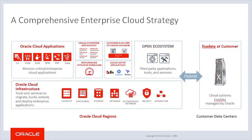Our cloud infrastructure provides all the core services to build and deploy production applications. Services include compute, containers, storage, database, autonomous database, security, and integration. We also have an extensive SaaS offering, including CX, HCM, SCM, EPM, ERP, and data as a service. Since our hardware selection and design choices were focused on dependable performance, it was easy to also cover performance-intensive workloads, including any HPC workload, even those requiring specialized hardware. And if you're building new cloud-native applications utilizing functions, Docker, or Kubernetes, we have those services as well.